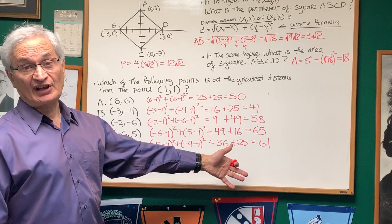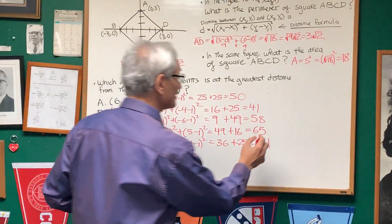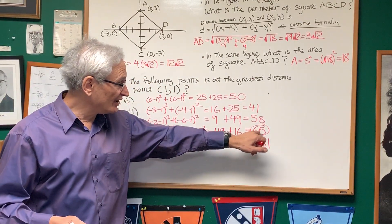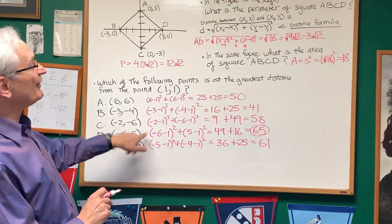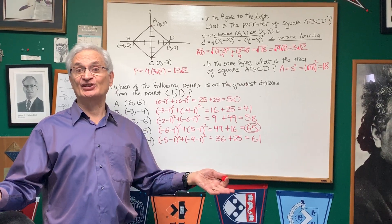So, looking at the set of numbers, which of these points is at the greatest distance from (1,1)? It's the one that gives us the largest value under the square root. That's 65 in the distance formula. So negative 6, 5 is the point that's at the greatest distance to the point (1,1), using the distance formula.